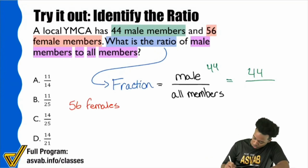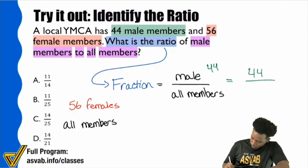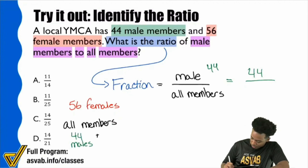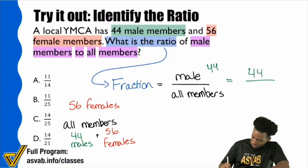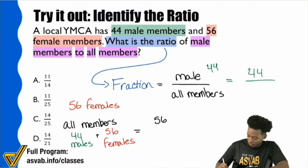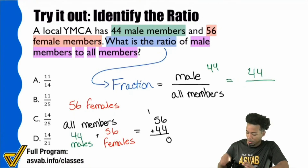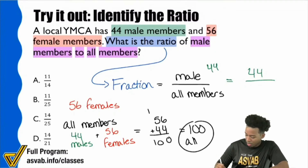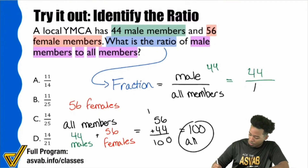The sum — the total of the number of males and females together — that's what all members will be in this problem. So if we want to get all members, that would be 44 males added with 56 females, and that gives us all members. What's 44 plus 56? 6 plus 4 is 10, 5 plus 4 is 9, carry the 1 — that gives us 100 for all members. So you can write 100 there.